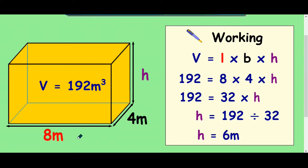And you can test it out. 8 times 4 times 6 in your calculator and you would get 192 meters cubed. So this is what's called a reverse question, working out one of these parts when we've been given the volume.